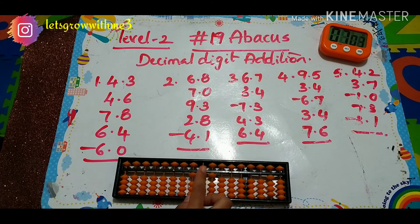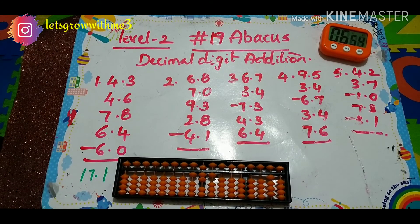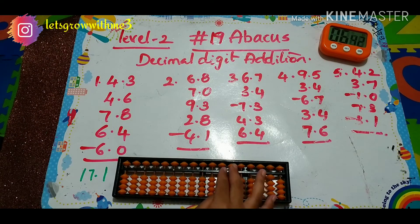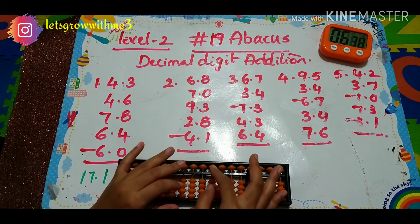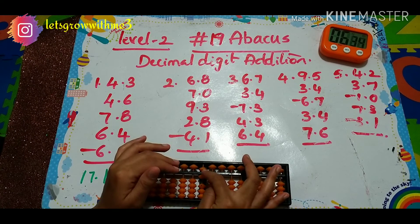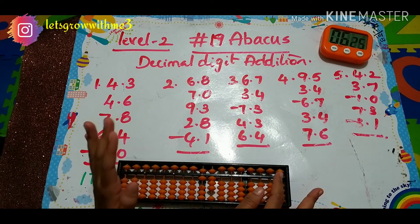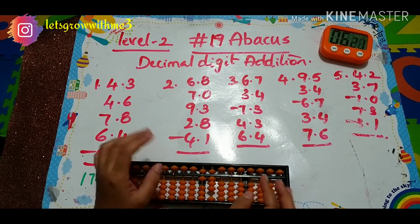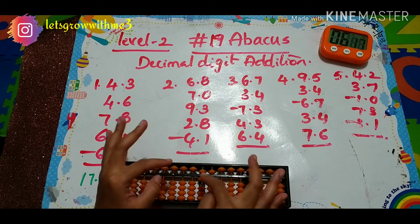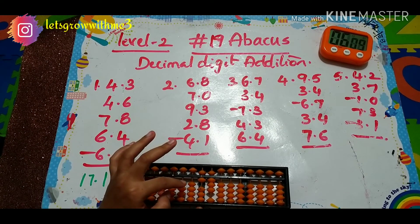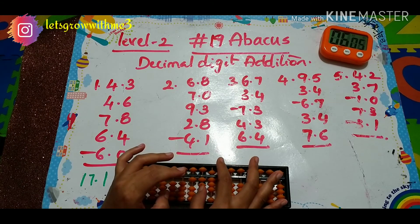Next problem: 6.8 plus 7.8 plus 7.0. To add 7 — papa mama baby's up. Whenever we don't have sufficient beads we have to shift to the left side of the column.